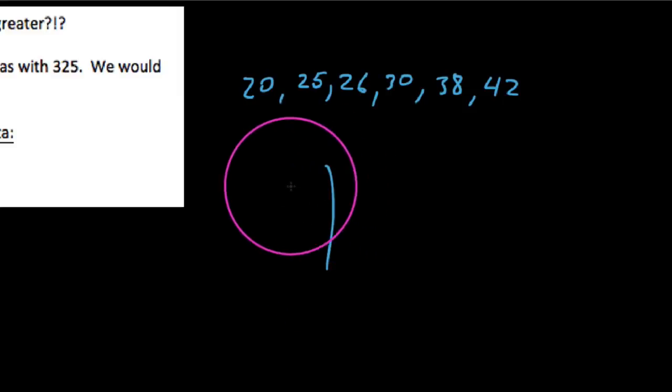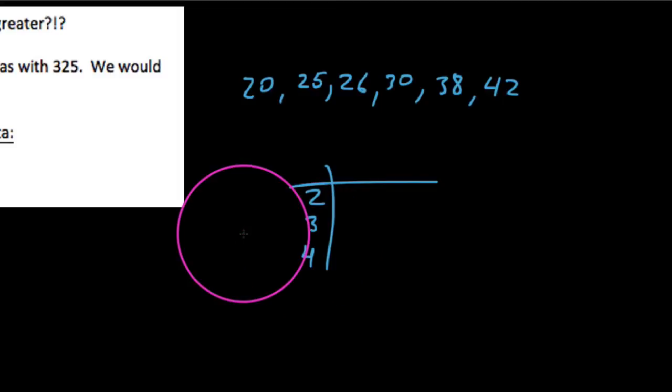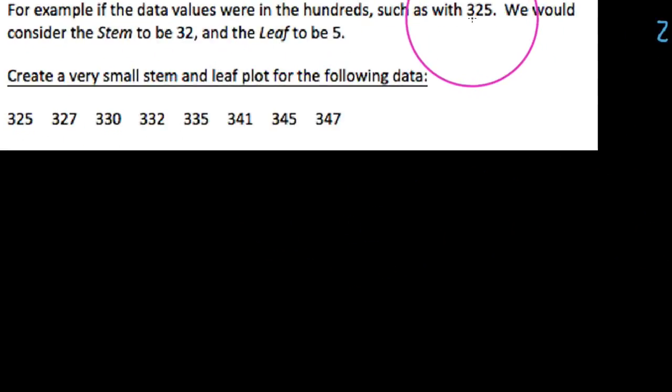In these instances, when you create your stem, we would be putting the leading digits out here, like the 20s, the 30s, and the 40s. But what does one do when you have data values such as 325?